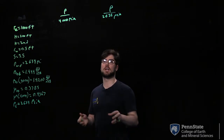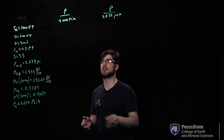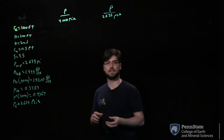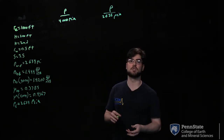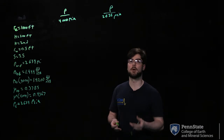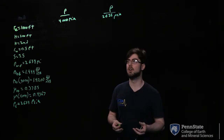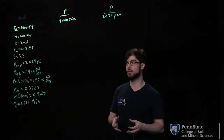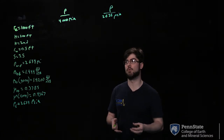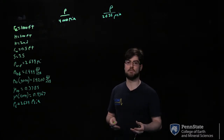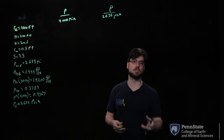For our reservoir itself: our external radius r_e is 1,000 feet, our thickness is 200 feet, our permeability is 2 millidarcies, our wellbore radius r_w is 0.5 feet, and our skin factor is 3.5, which is dimensionless.